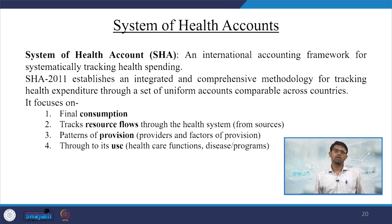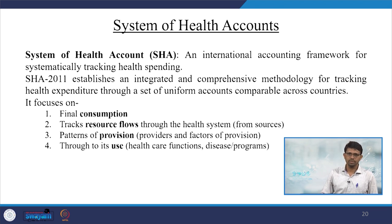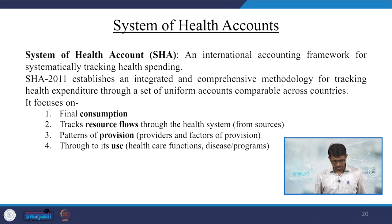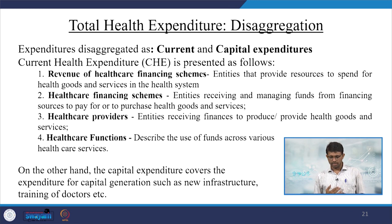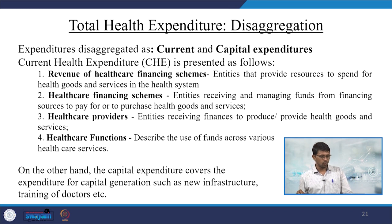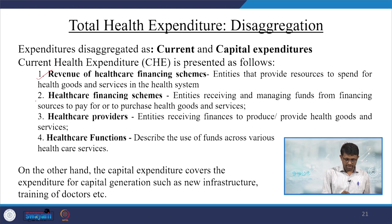SHA 2011 is an international accounting framework for systematically tracking health spending — an integrated, comprehensive methodology using uniform accounts comparable across countries. It covers final consumption and tracks resource flows through the health system from sources, through patterns of provision including providers and factors of provision, to use by healthcare function, disease program, etc. Current health expenditure (CHE) includes revenue of healthcare financing schemes, healthcare financing schemes, healthcare providers, and healthcare functions.